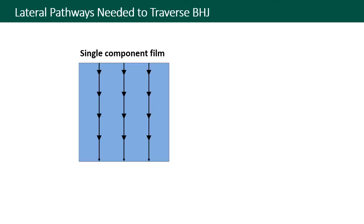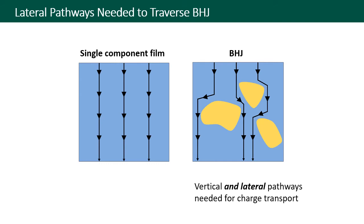This is in contrast to the typical case of a single component film, where we think of charge flow as being uniformly along one direction. However, in bulk heterojunctions the acceptor material shown in yellow acts as an excluded volume for hole transport, leading to roundabout charge transport pathways. So how does this impact our understanding about ways to improve charge collection in organic solar cells?